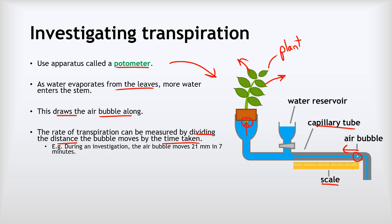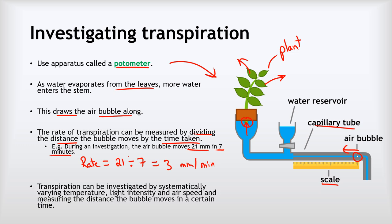This allows us to measure the rate of transpiration by dividing the distance the bubble moves by the time it takes to move. For example, if the air bubble moved 21 millimetres in a 7-minute time period, the rate of transpiration would be 21 divided by 7, giving us 3 millimetres per minute. You can systematically investigate transpiration by varying the temperature, light intensity, or air speed, measuring the distance the bubble moves in a certain time, and then doing this calculation.